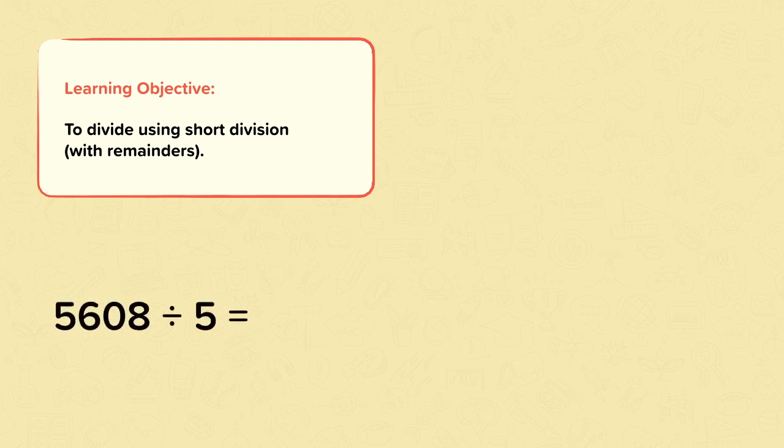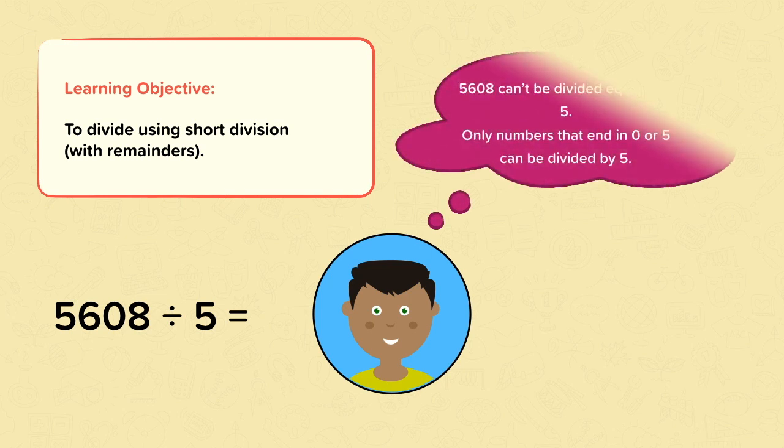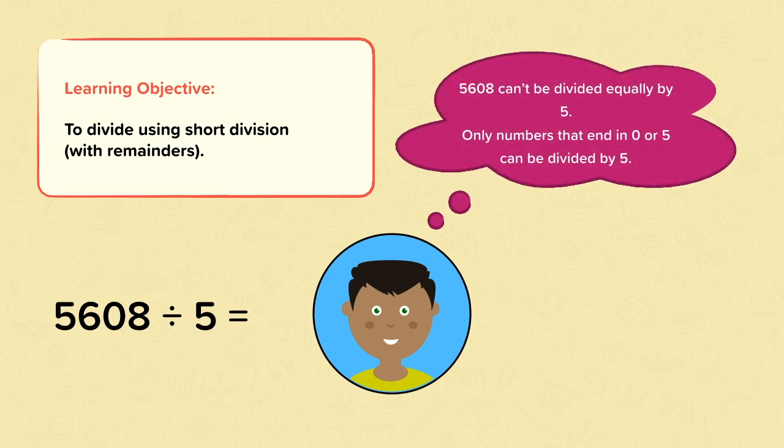Let's look at the calculation 5,608 divided by 5. Leo knows that 5,608 can't be divided equally by 5. Only numbers that end in 0 or 5 can be divided by 5. This means that if 5,608 was divided into five equal groups, there would be some leftover. These leftovers are called remainders.